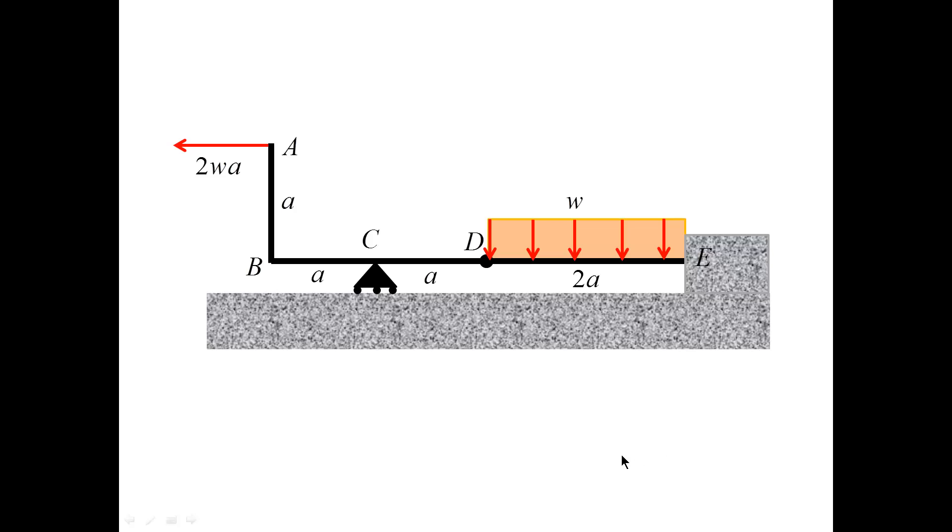In this problem, we are given an L-shaped beam attached to a wall at E, constrained by a roller at C. There is a hinge at D. The beam is loaded by a uniformly distributed load W, and a horizontal force 2Wa.